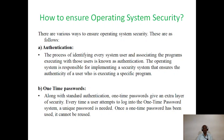To protect from these attacks, there are various ways to ensure operating system security. One method is authentication — the process of identifying every system user and associating the programs executing with those users. The operating system is responsible for implementing a security system that ensures the authenticity of the user who is executing a specific program.